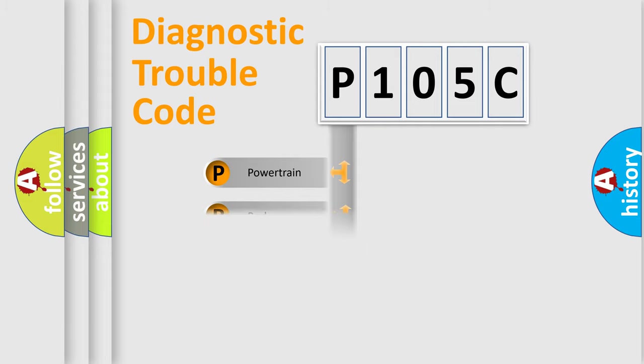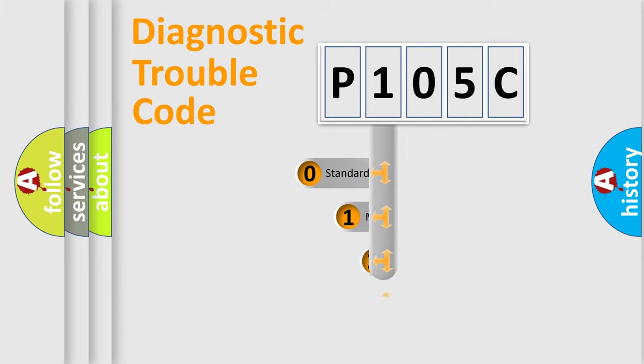Powertrain, Body, Chassis, Network. This distribution is defined in the first character code.